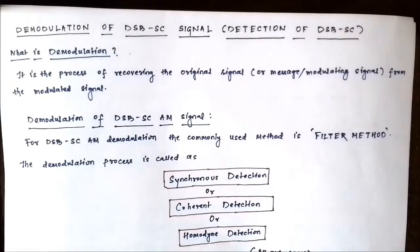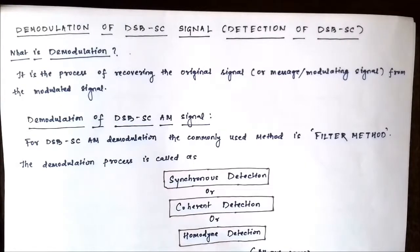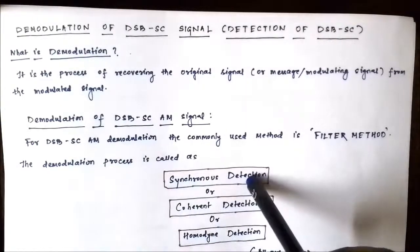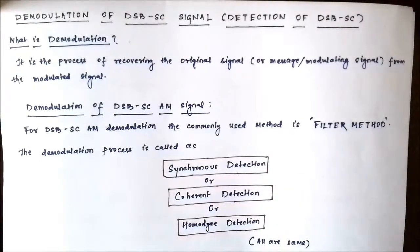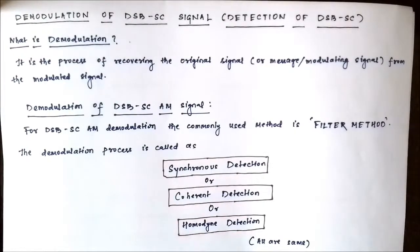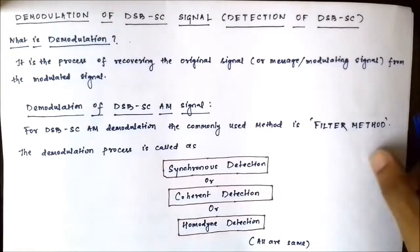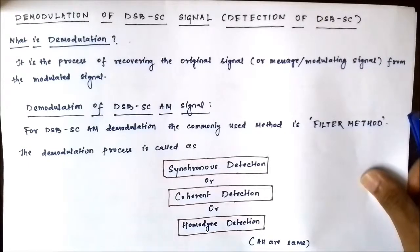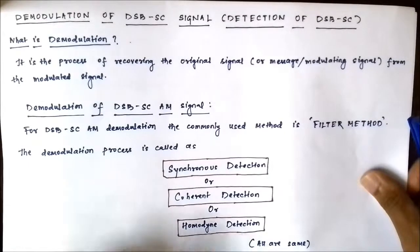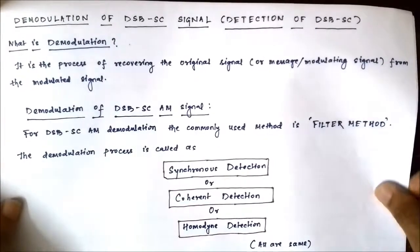A suitable low pass filter with a sharp cutoff frequency is used for the demodulation of amplitude modulated signals. This process is called synchronous detection, or coherent detection, or homodyne detection — all refer to the same technique, just different names. They employ filters with suitable sharp cutoff frequencies.